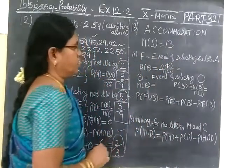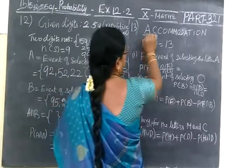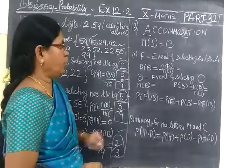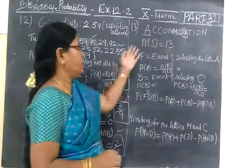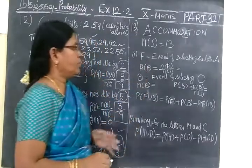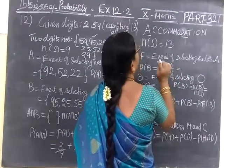So you can find 13 letters. The first event is event of selecting the letter A. So A is 1, 2, two times it is coming. Therefore, since it is given already it is A, so we give the name as N(E). So event of selecting the letter A, so P(E) is equal to N(E) by N(S).